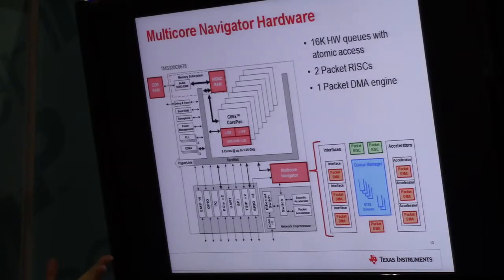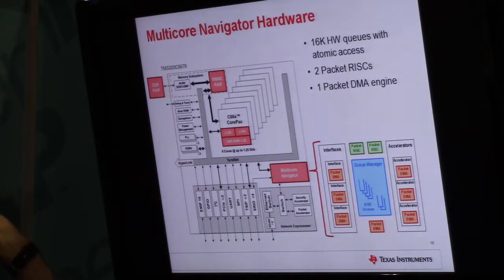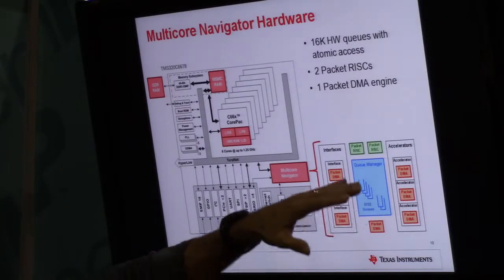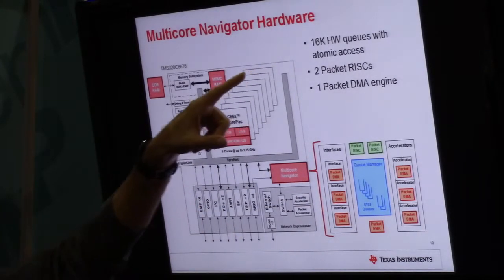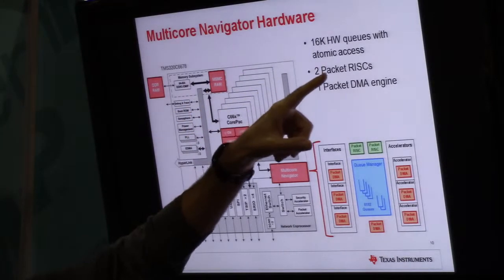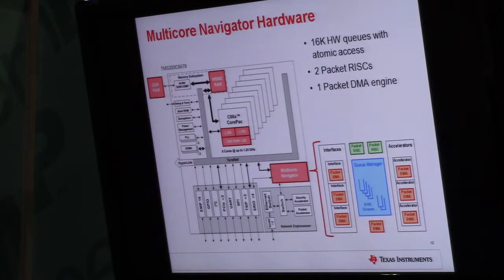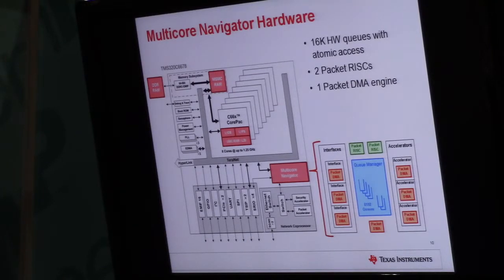The Multicore Navigator hardware is a block actually on the chip — a bunch of hardware queues. On this particular device, there are 16K of these hardware queues. The nice thing is that they have atomic access, so you can have one thread posting an event into those queues and another thread pulling it out, with atomic access capability built in — you don't have to lock around them. It's a very important part of our runtime.